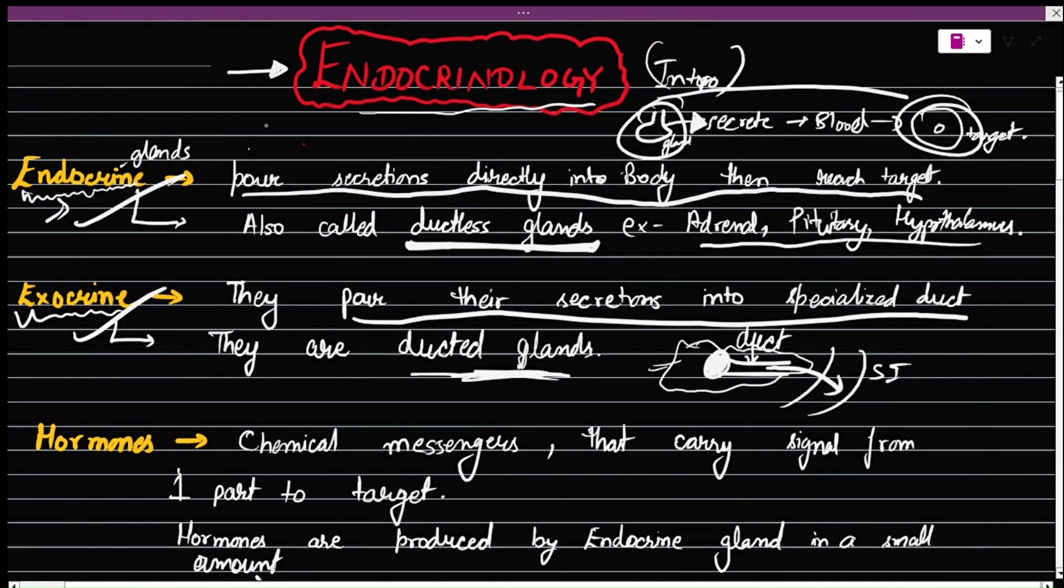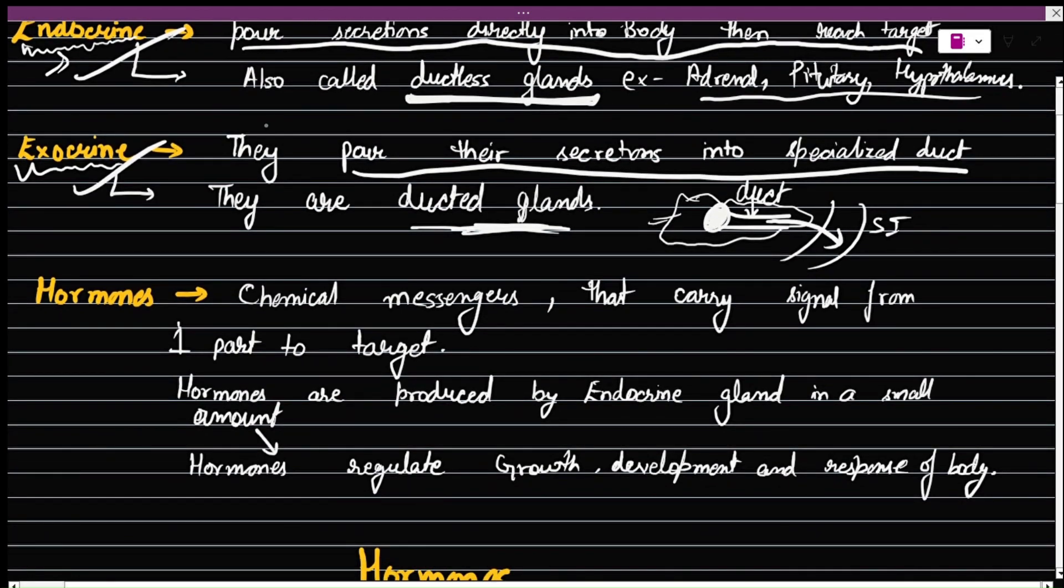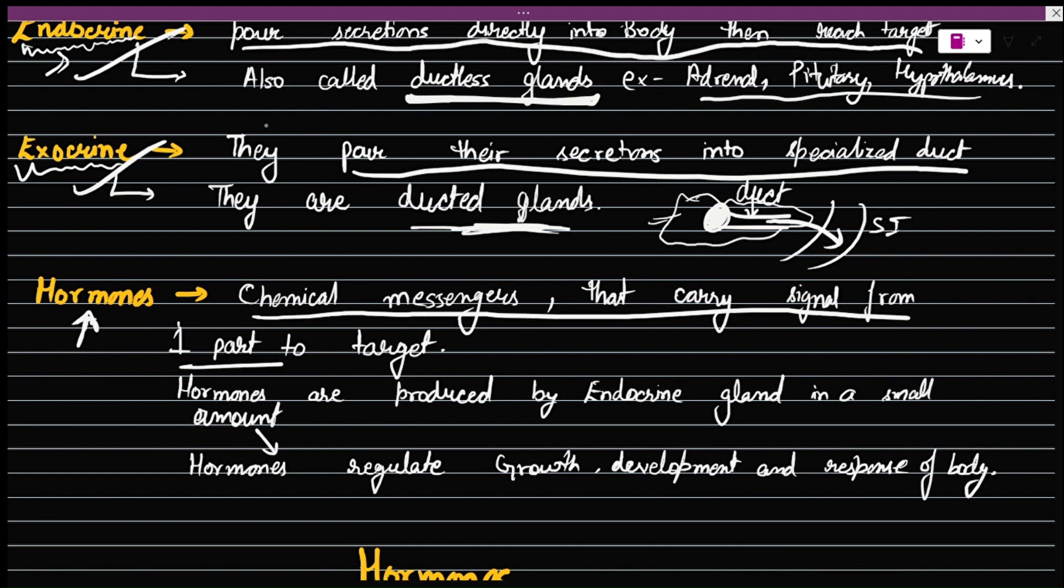The secretions which are secreted by these endocrine glands are called hormones. These hormones are chemical messengers that carry signals from one part to target, as I have explained to you earlier.